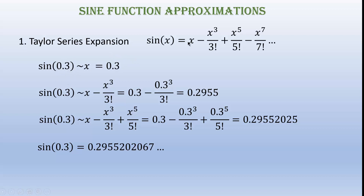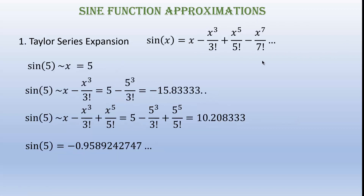But the main drawback of Taylor series expansion is that it works only for smaller values of x. Whenever x is a higher value, we need to find all the other terms in the series. Let's try for x equals 5. Whenever x equals 5, the sine value becomes 5. But we know that the sine value ranges from minus 1 to plus 1, so we are not getting an accurate result. Taking two terms or even three terms also does not give the desired result. The actual value of sine 5 is minus 0.95.